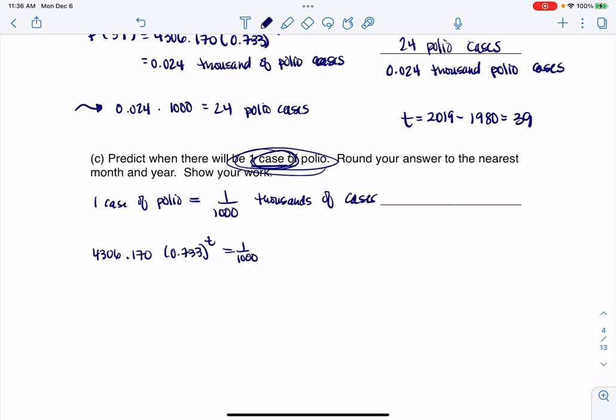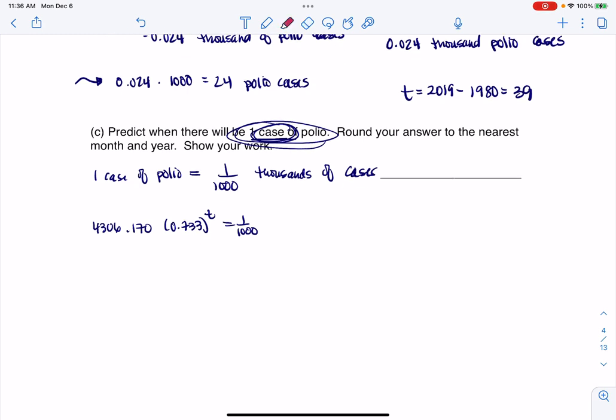I'm going to take my model of 4306.170 times 0.733 to the T and set it equal to one out of a thousand. I'm not going to use my calculator until the bitter end because the sooner I start rounding off on decimals, the less precise my answer is going to be at the end. The first thing I want to do, since I have an exponential equation—and I say exponential because my variable is up in the exponent—is I want to isolate this exponential term. Let me divide both sides by 4306.170.